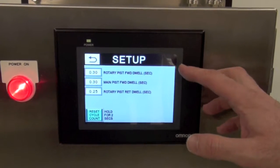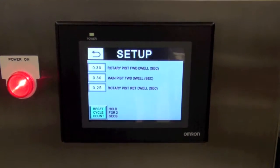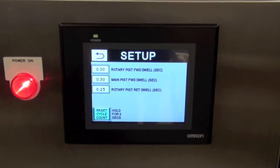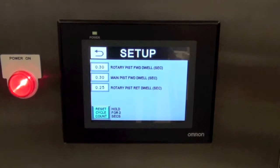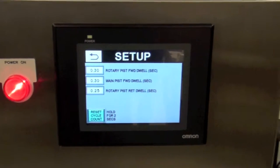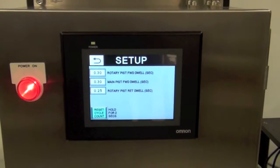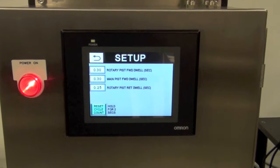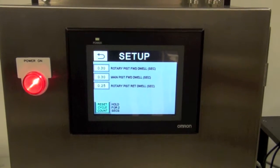This screen shows you the timing for the rotary and main pistons. This is controllable to allow you to change your settings if your products are especially stringy or thin, or if your products are especially thick.